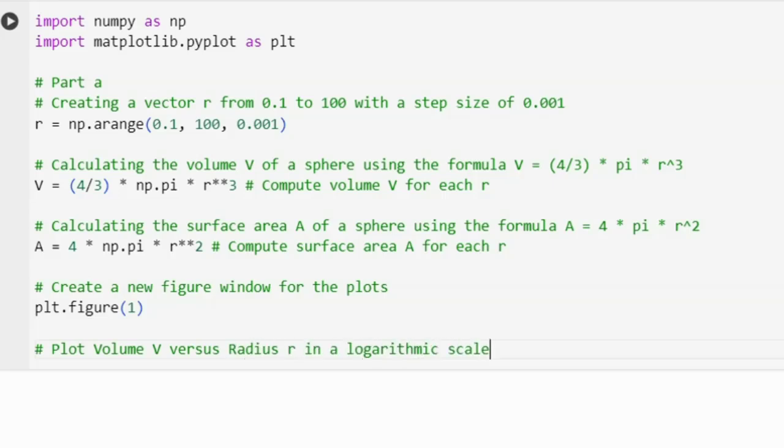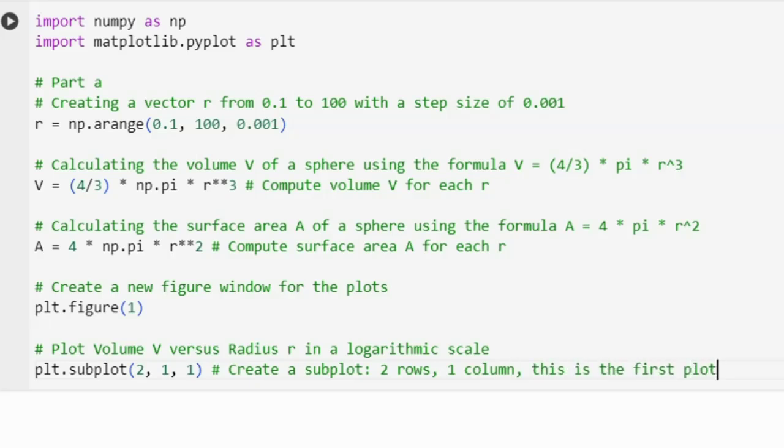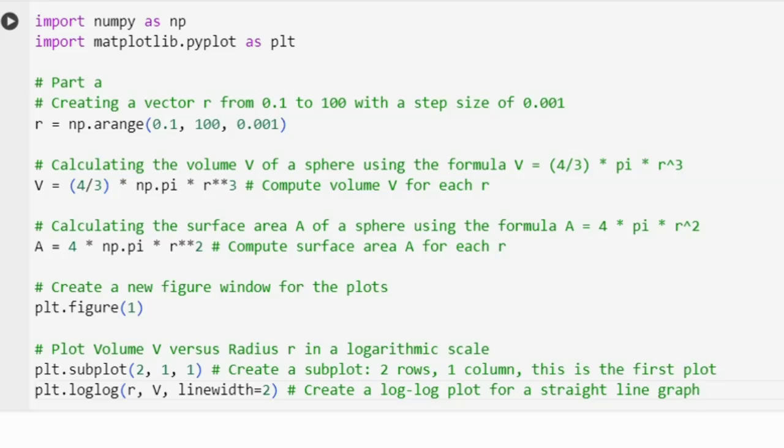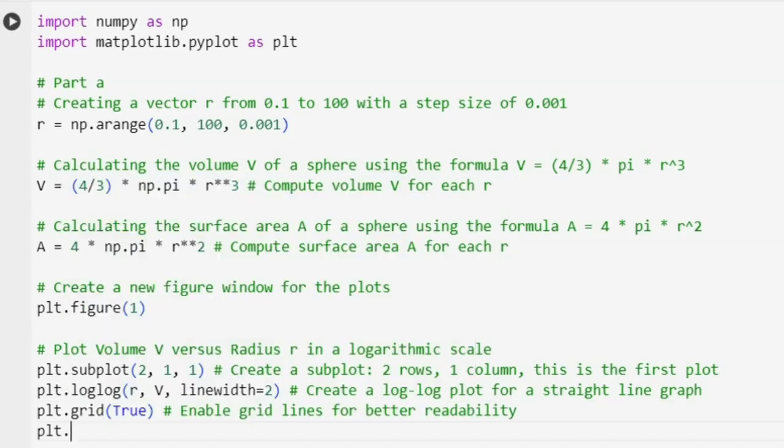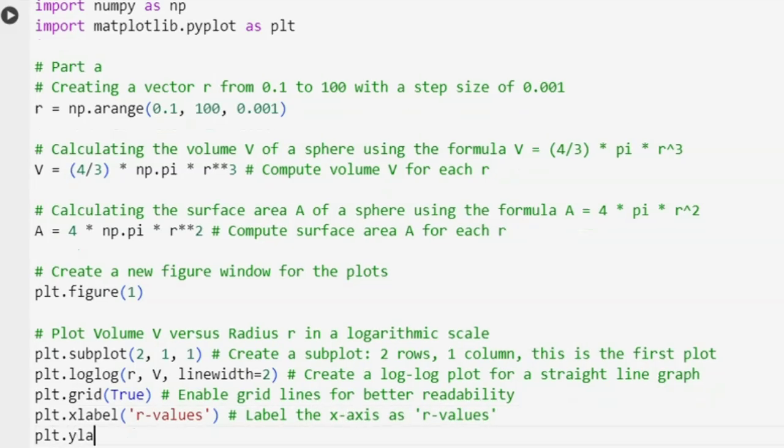Subplot command splits the single figure into number of sections. The first argument is 2, which means there will be 2 rows. Second argument is 1, which means there will be 1 column. And third argument is 1, which means first section is active for plotting. What if we want to create a subplot with 4 rows and 2 columns and select 2nd section of figure? Comment the command if you understood subplot. Log log command converts the horizontal as well as vertical axis of the figure to logarithmic scale. Radius will be shown on the horizontal axis and vertical axis will represent volume of the sphere for each value of radius. Setting grid as true will show grid lines for better visuals. Setting labels makes it easy for viewers to know what do horizontal axis represent. In our case, it represents radius. We create a logarithmic plot of V against R to visualize the relationship between volume and radius.